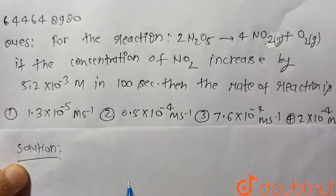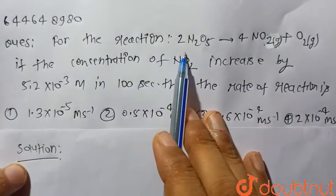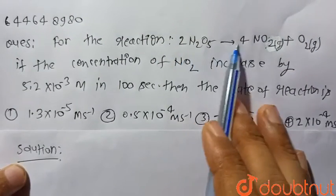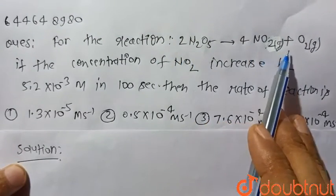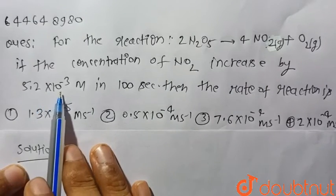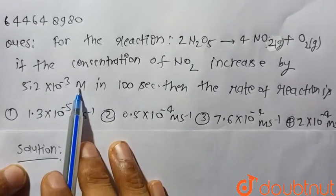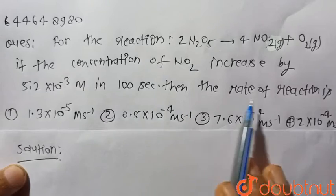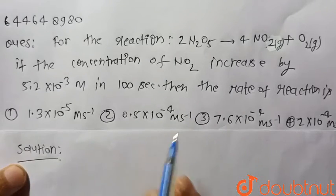Hello everyone, consider the given question. For the reaction 2 N2O5 → 4 NO2 gas plus O2 gas, if the concentration of NO2 increases by 5.2×10^-3 molar in 100 seconds, then the rate of reaction is... Four options are given.